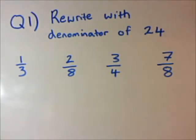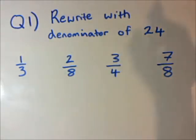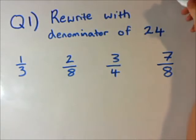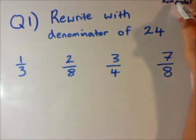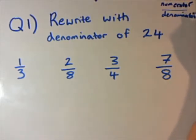Question one: rewrite with a denominator of 24. Let's first look at this word, denominator. This is a fancy maths word. When you see a fraction, you'll have a numerator and you'll have a denominator. So the numerator is on the top and the denominator is on the bottom. Just remember that.